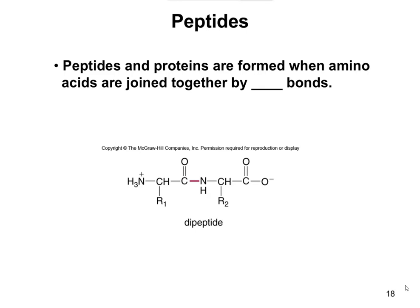Peptides and proteins are formed when amino acids are joined together by blank bonds. What kind of bond do you see there? You should be able to identify that as an amide bond. Whenever you have a C double bonded to O bonded to N, that's an amide functional group. Whenever it's an amide bond that links together amino acids like this, we call it a peptide bond. You can refer to that bond as either an amide linkage, an amide bond, or a peptide bond — both would be right.